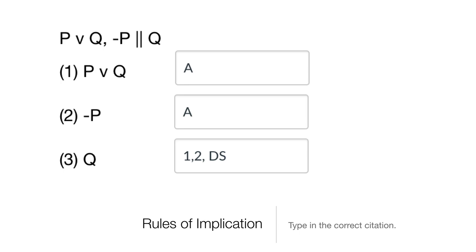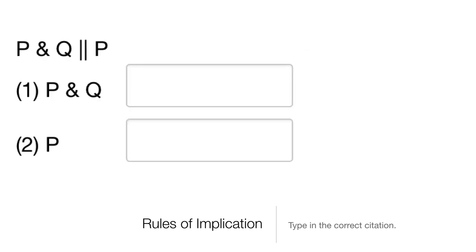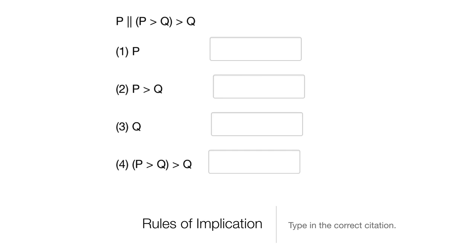One more: we have a single premise 'P and Q' and we infer P. We have two rules for conjunction — conjunction introduction and conjunction elimination. We're not creating a conjunction here; we're pulling out one conjunct from a conjunction. That's conjunction elimination.